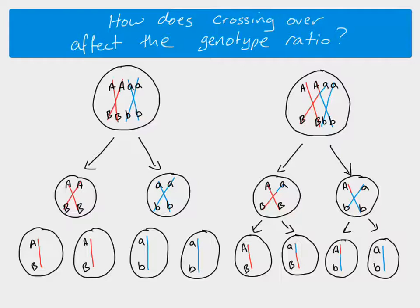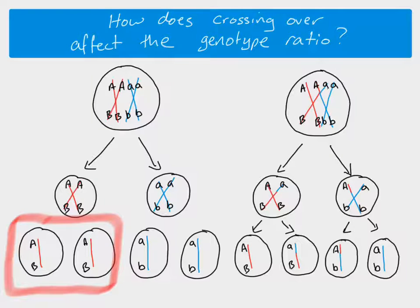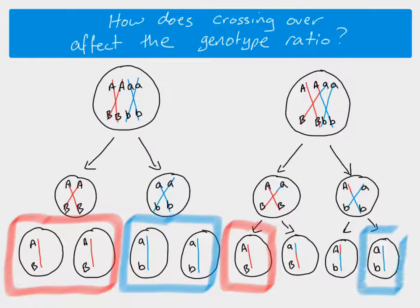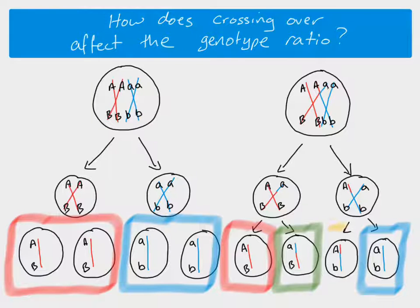Even though crossing over might take place, if we look at these two which are the same — the chromosomes and the allele combination is the same — we still get one out of four of our gametes with that same combination, and again one out of four with the same combination. So these combinations are called the parental chromosomes or the parental class. Then we can see that we've got two new ones, and they are the recombinant chromosomes.